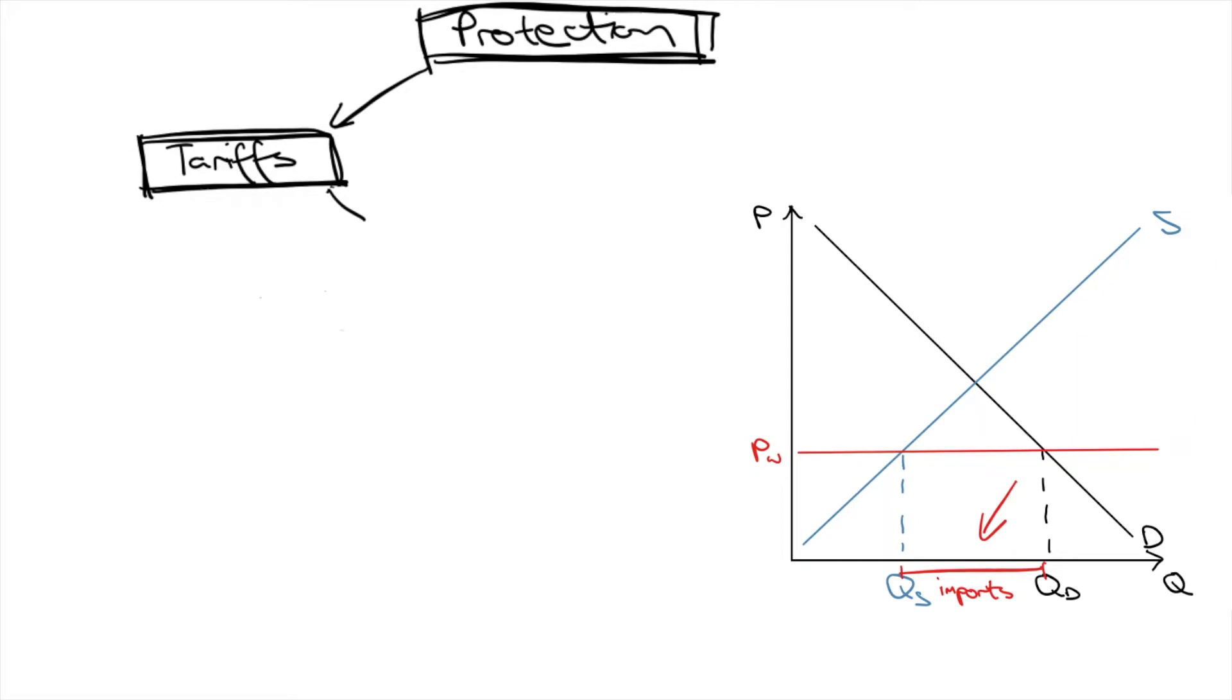Tariffs are one of the ways to achieve this. Tariffs are a tax on imports, therefore increasing their price to consumers in this market. In effect, it's raising the price of imports, or the world price. By doing so, the import gap is narrowed in the diagram. Foreign producers lose market share and revenue, as seen by the shrinking of this box.